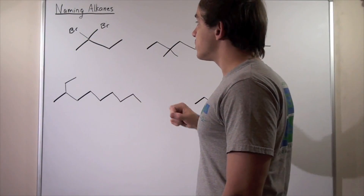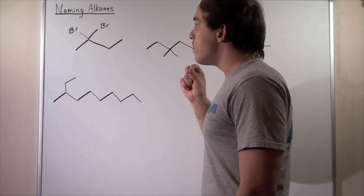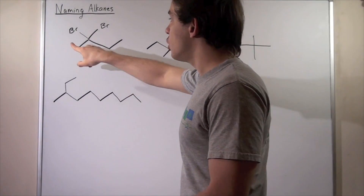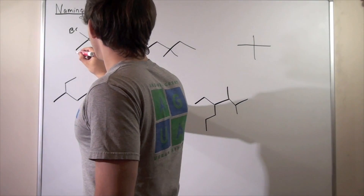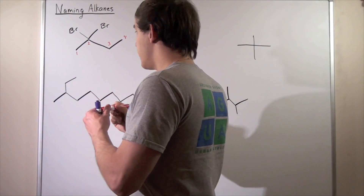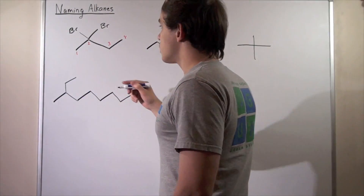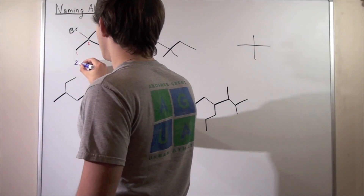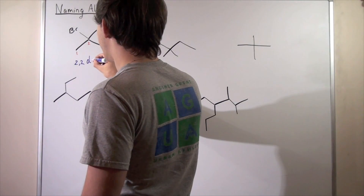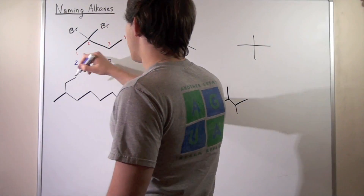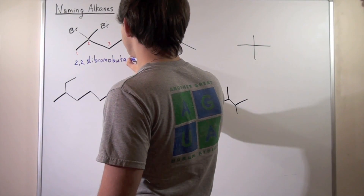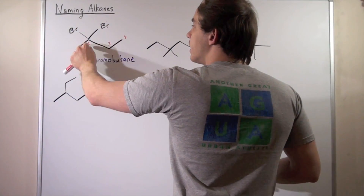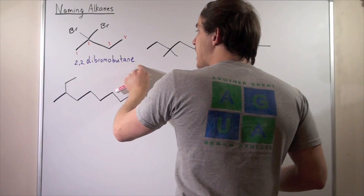Now, which way do we want to go — starting from this carbon or this carbon? Remember, our substituents should have the lowest possible number. So we begin on this end: one, two, three, four. Our substituents are both located on the second position. That means we have 2,2-dibromobutane. The two, two simply means our two bromines are located on the second position, and our chain is butane — one, two, three, four.